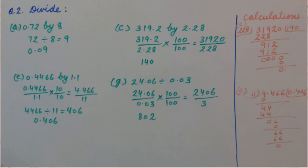Similarly, part C: 319.2 by 2.28. Because the divisor is a decimal number, we will remove the decimal from the divisor by multiplying by 100 upon 100, because two decimal places are there in the divisor. It is 31,920 upon 228, and its quotient is 140.